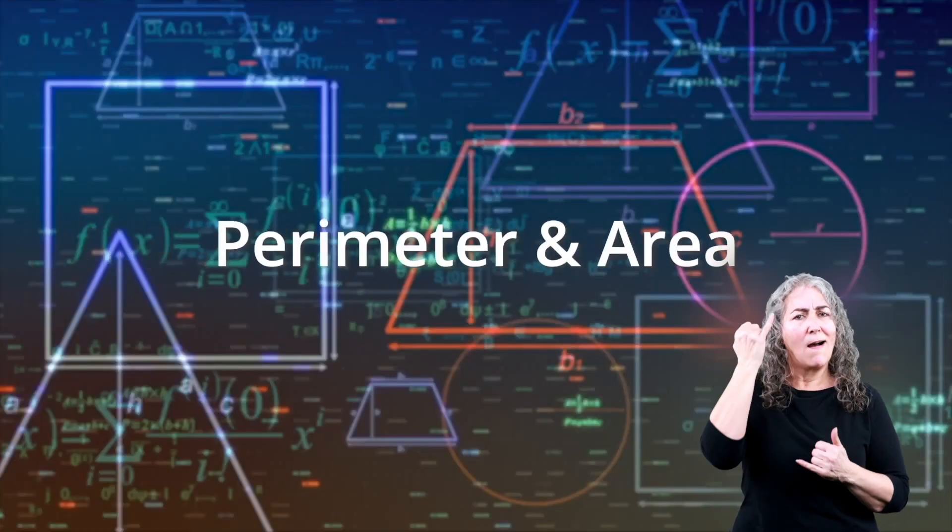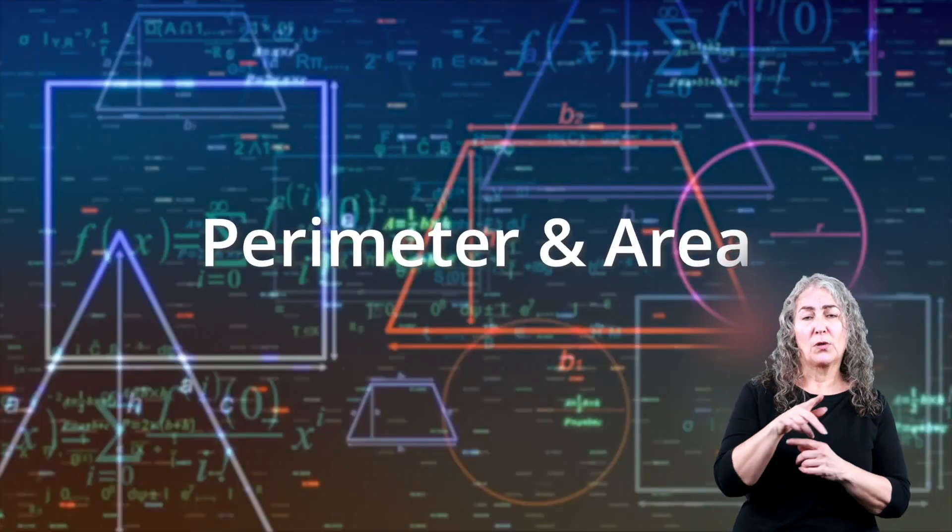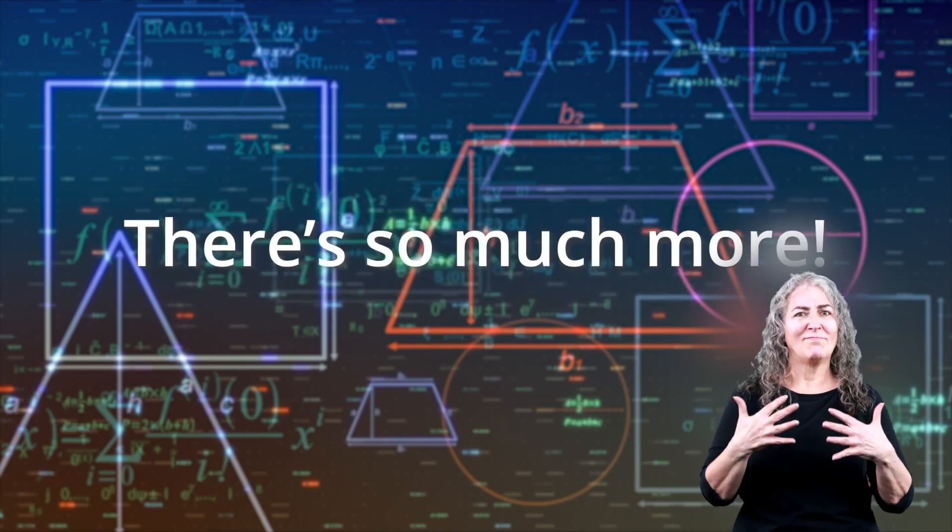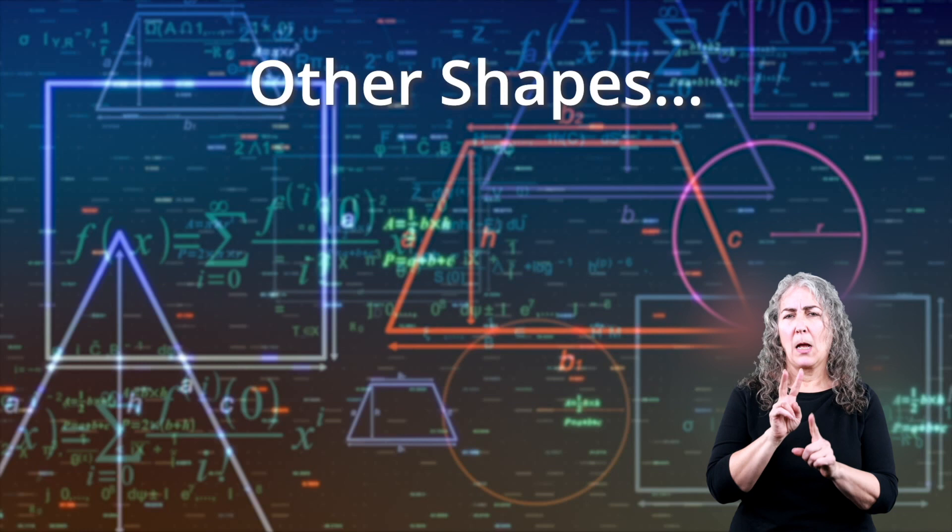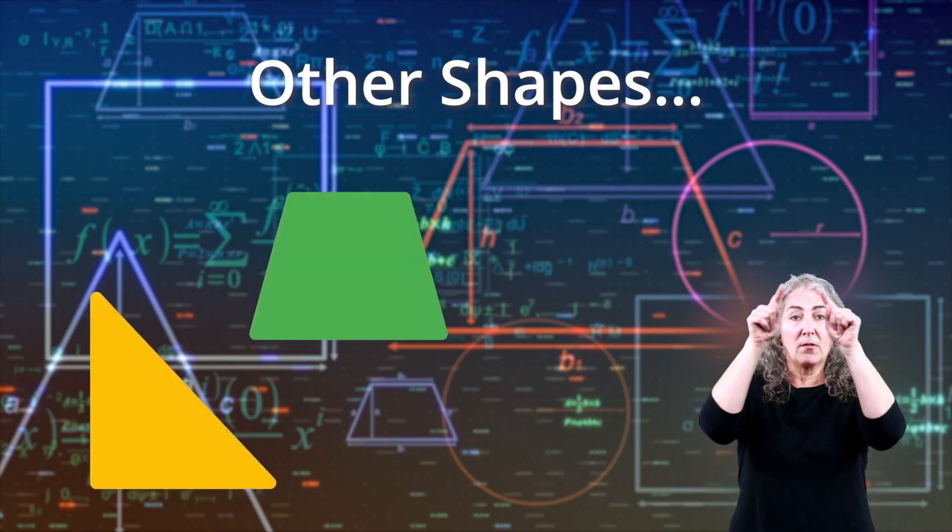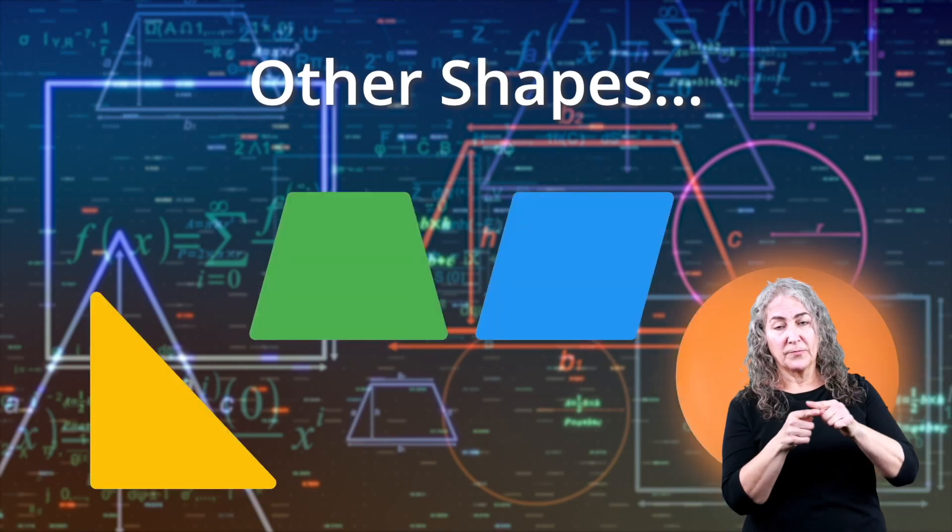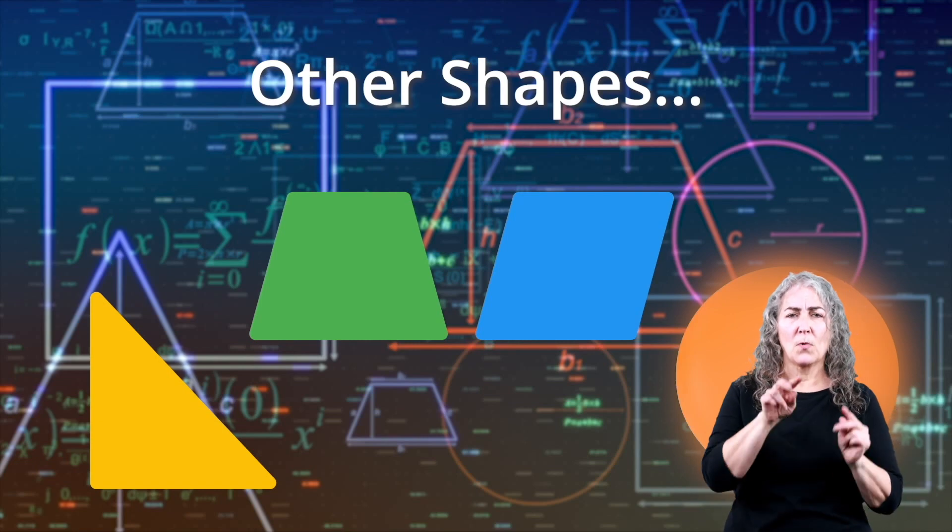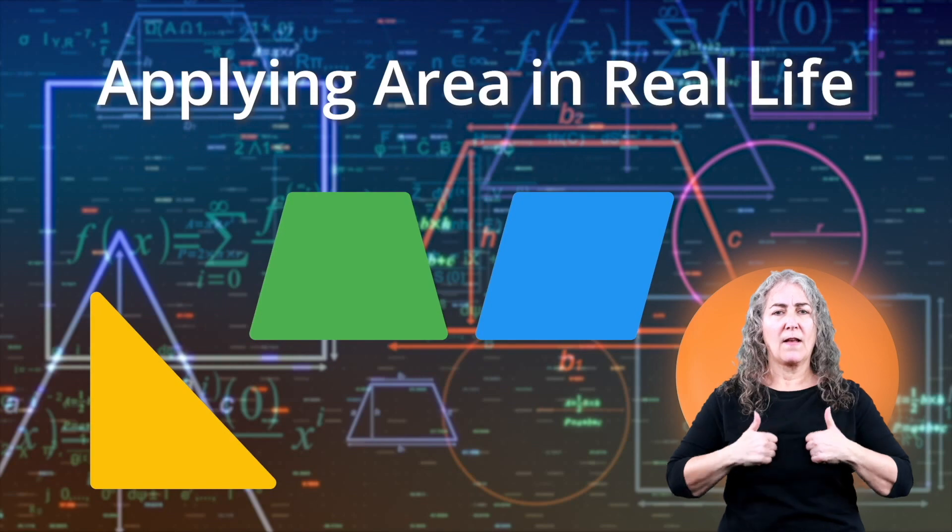So, now you know the general idea of perimeter and area. Of course, there's a lot more to learn. For more about area and how it applies to shapes like triangles, trapezoids, rhombuses, and others, watch our other video about area called Applying Area in Real Life.